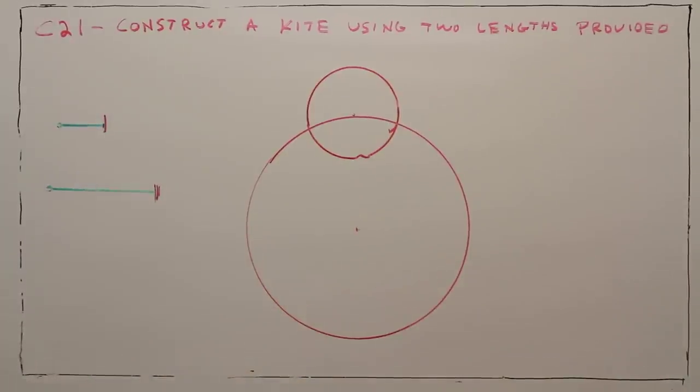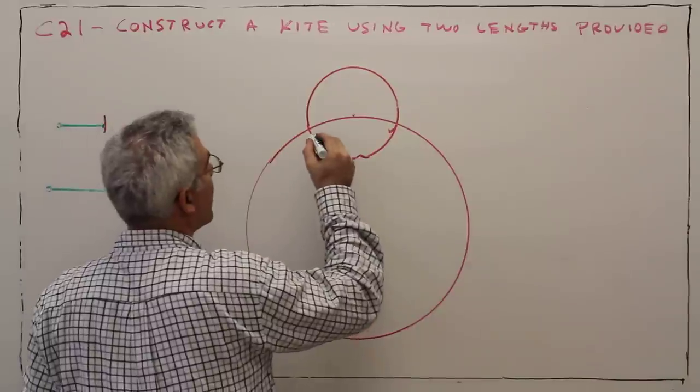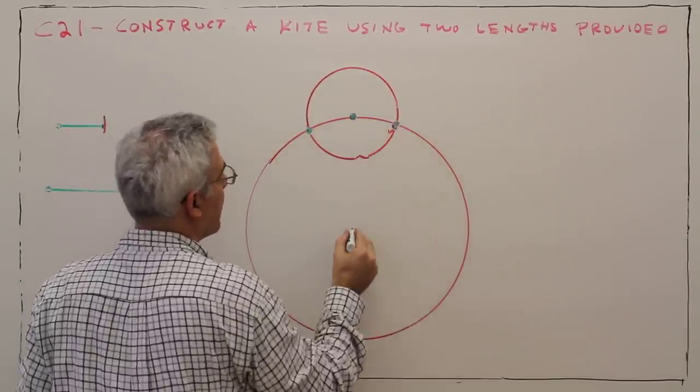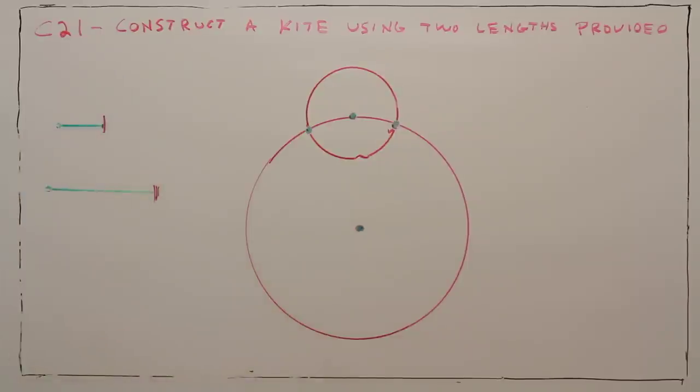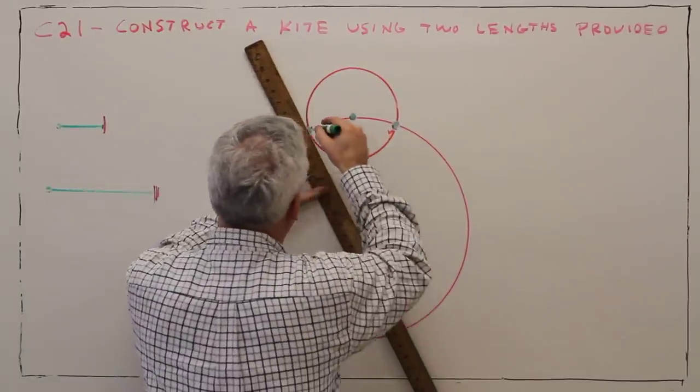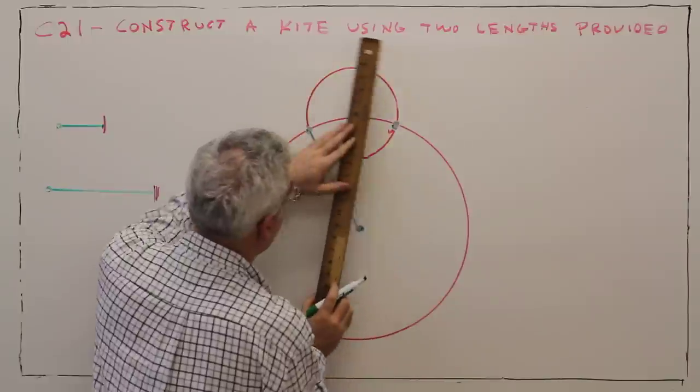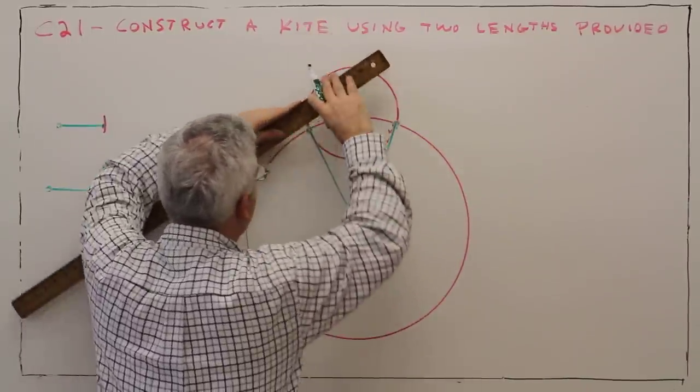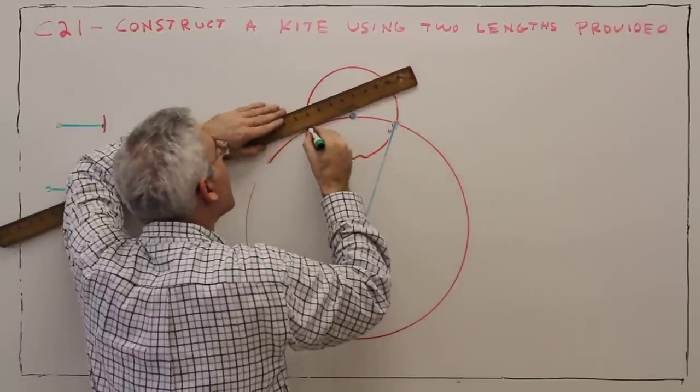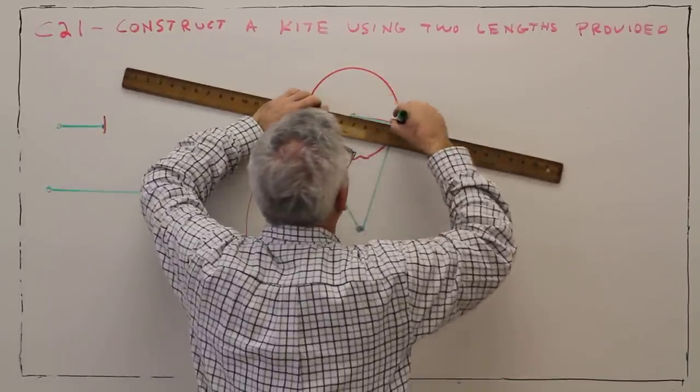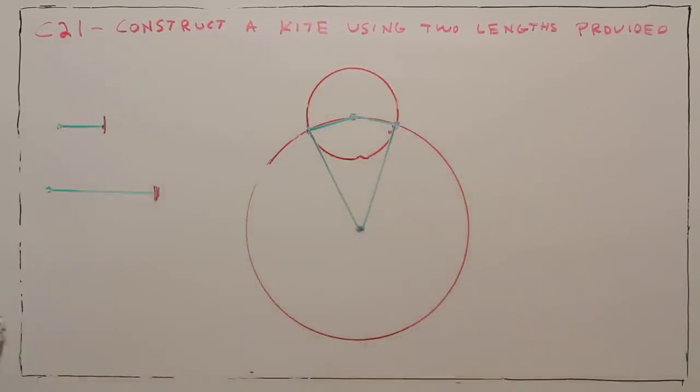And then you're pretty much done. Connect intersection points to the center. And there's your kite.